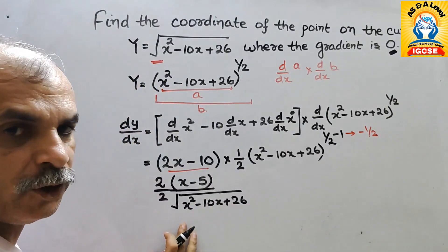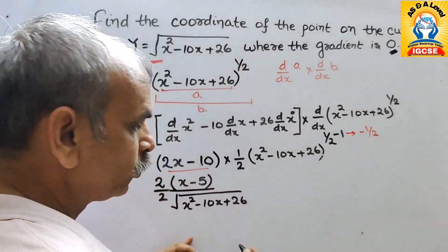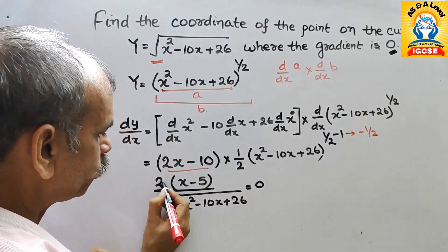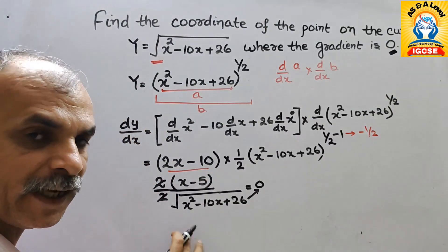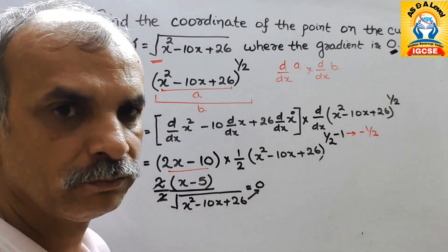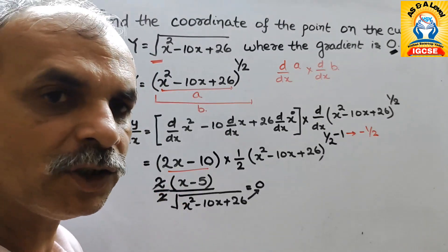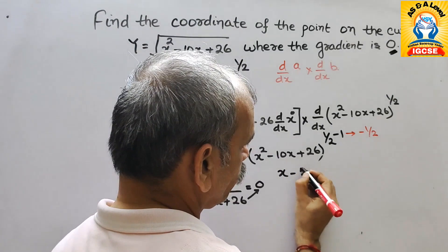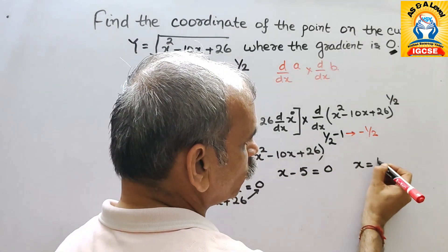Now this value, this is the gradient. Gradient they have given you 0. So here we will put 0. Now 2 and 2 will go out. If you cross multiply this, this denominator get vanish. So now you will get x minus 5 is equal to 0. So that means x is equal to 5.